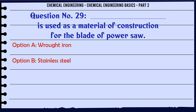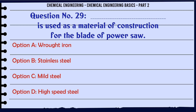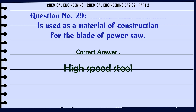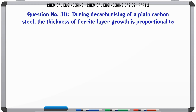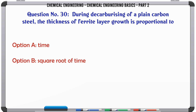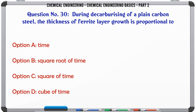What is used as material of construction for the blade of a power saw? a) wrought iron, b) stainless steel, c) mild steel, d) high-speed steel. The correct answer is: high-speed steel.